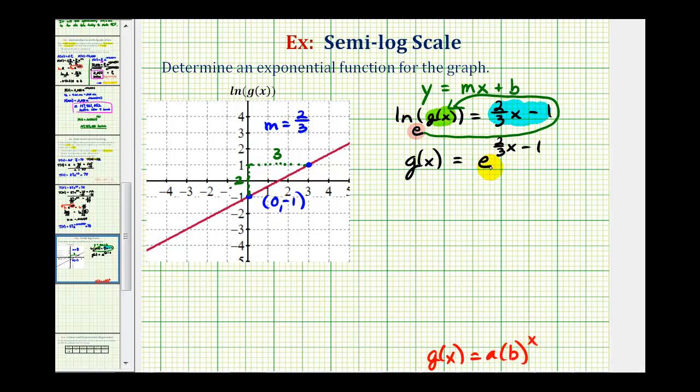We'll first use the product property of exponents. We can write this as g(x) = e^((2/3)x) · e^(-1). Now let's use the commutative property of multiplication and change the order, so we'd have g(x) = e^(-1) · e^((2/3)x).